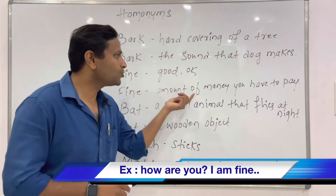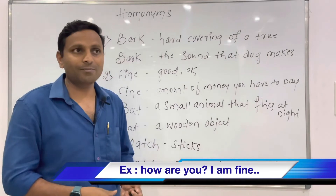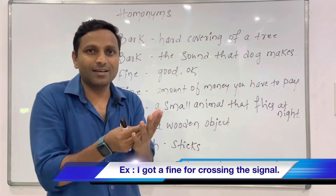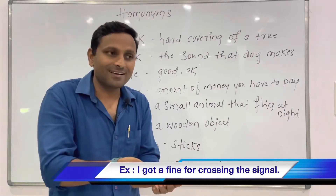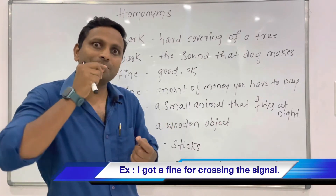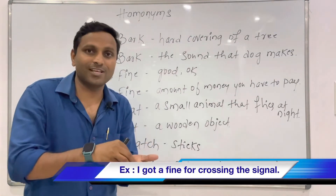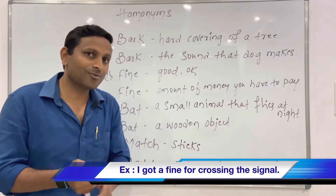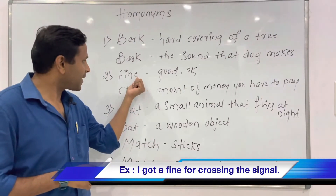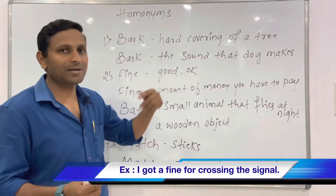Fine also means an amount of money you have to pay as a penalty. For example: 'I got a fine for crossing the signal' or 'I got a fine for speeding the vehicle.' So fine can mean both feeling okay and a penalty payment. Spelling is the same but the meaning is different — that's what we call homonyms.